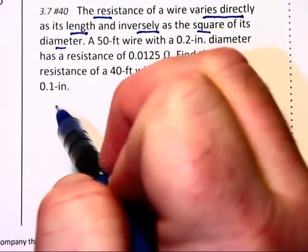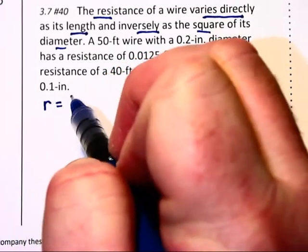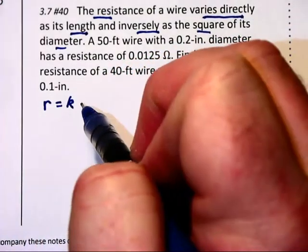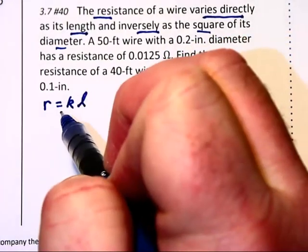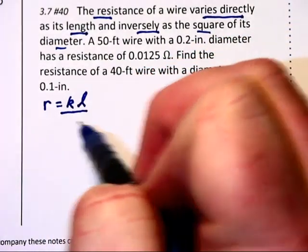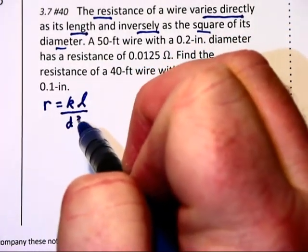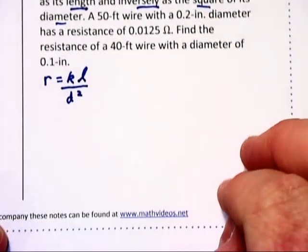Okay, here we go. R for resistance varies, there's our equals K, directly with the length, so I'll use L for the length, and inversely with a square of the diameter, so that will be D squared. There's our basic relationship.